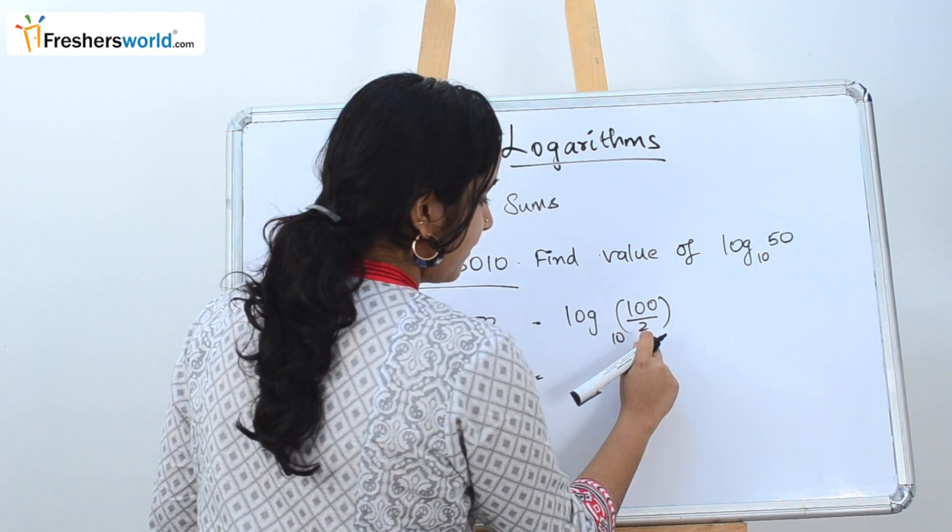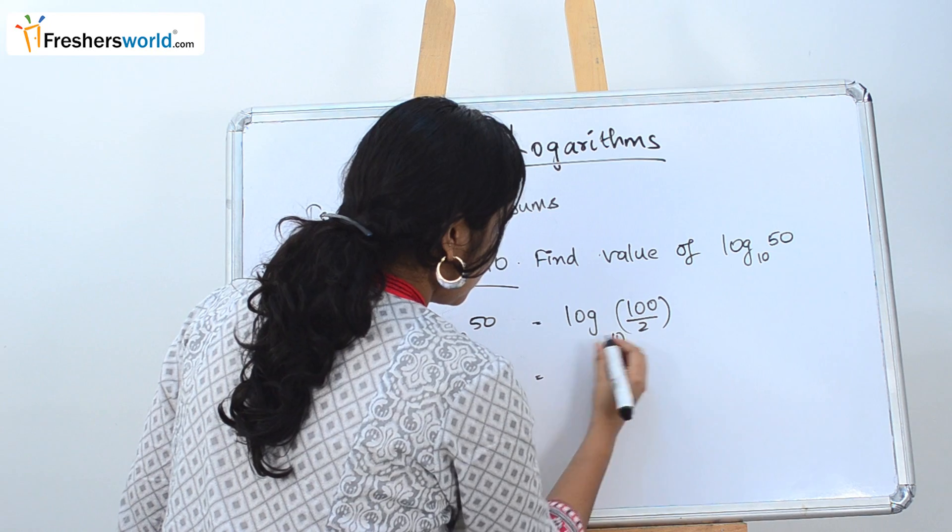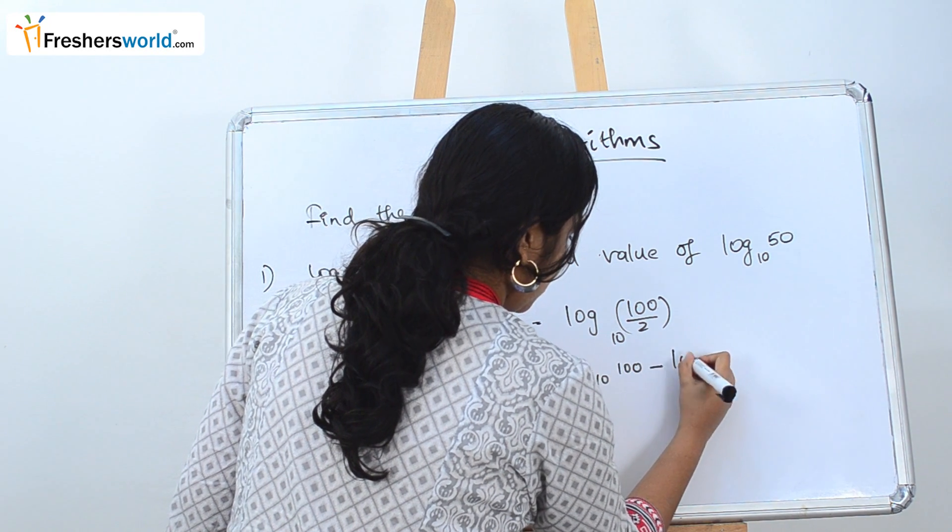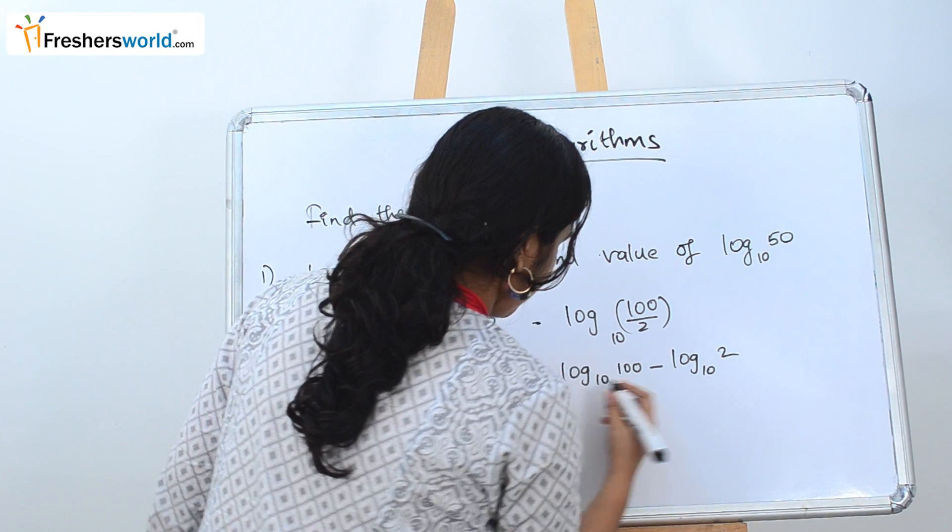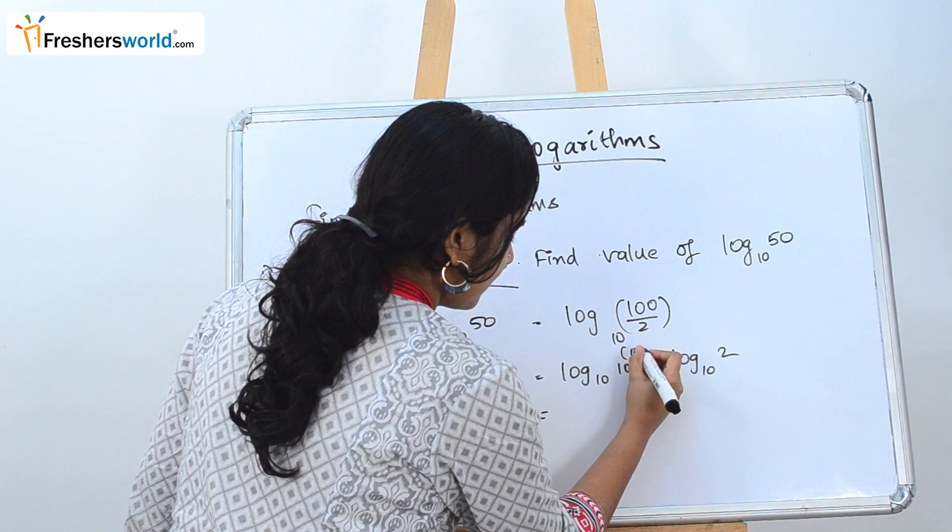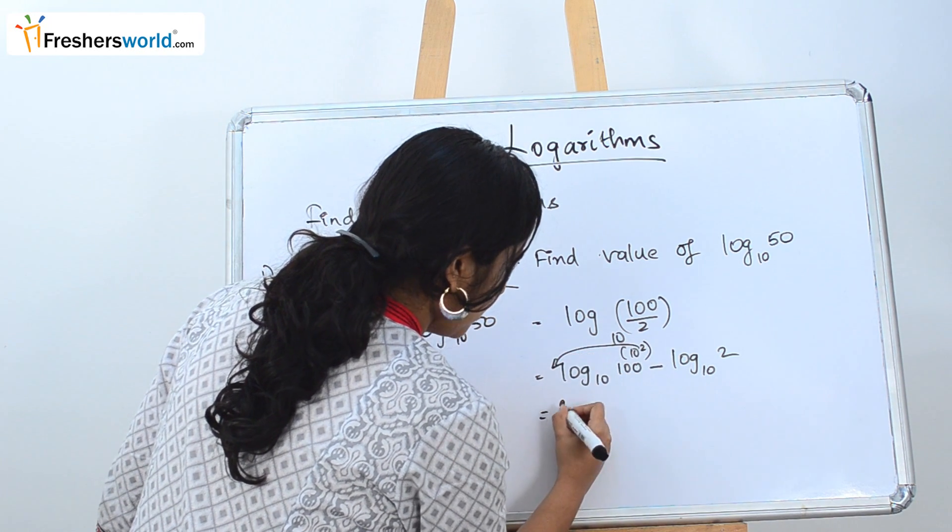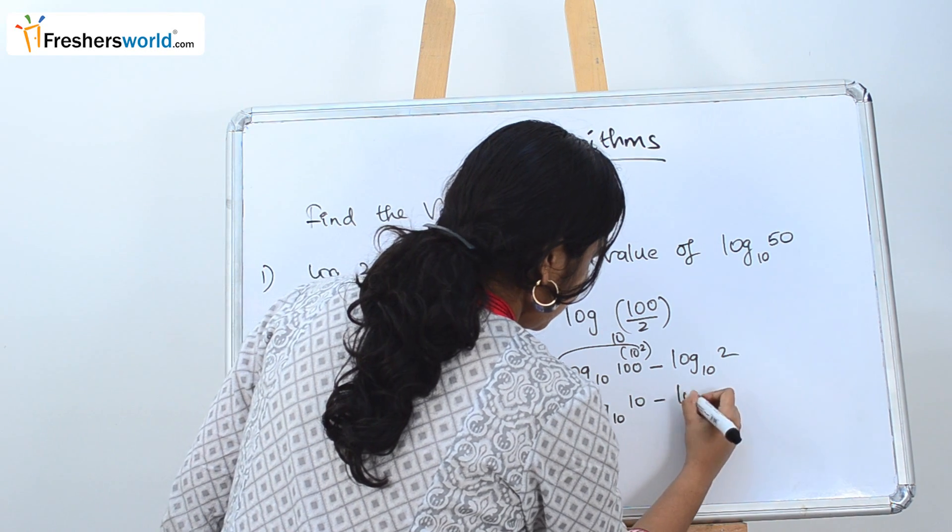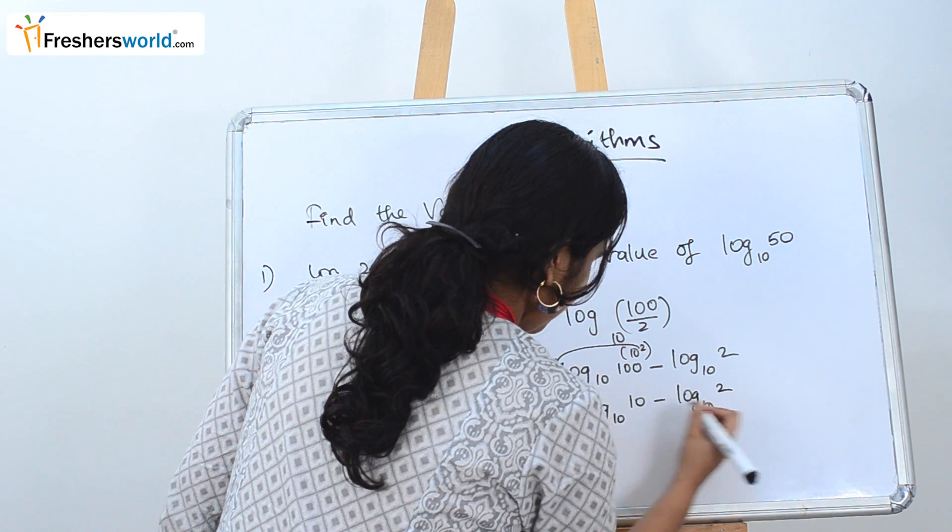It can be written as log 100 by 2. This division is nothing but a subtraction in log format. So log base 10 of 100 minus log base 10 of 2. This can be rewritten as 10 squared. So this 2 can be taken in front.